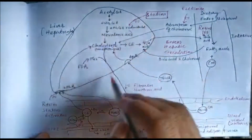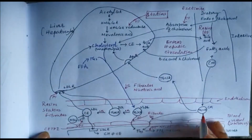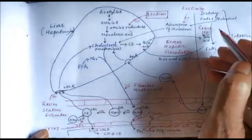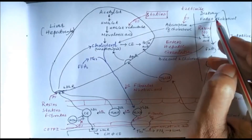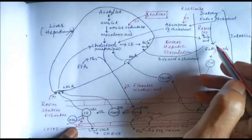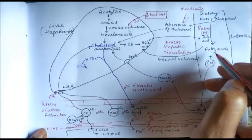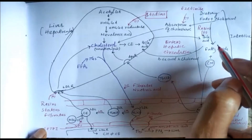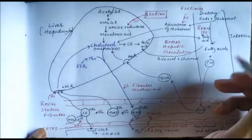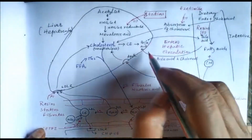This is a hepatocyte — the cell of liver — and this is intestine, this is blood vessels, and then peripheral tissues and adipose tissue. Dietary fats along with cholesterol, when we intake them, are emulsified by the bile acids and bile salts, and after emulsification they can be absorbed. The digested fatty acids and chylomicrons are absorbed, and enterohepatic circulation is there.